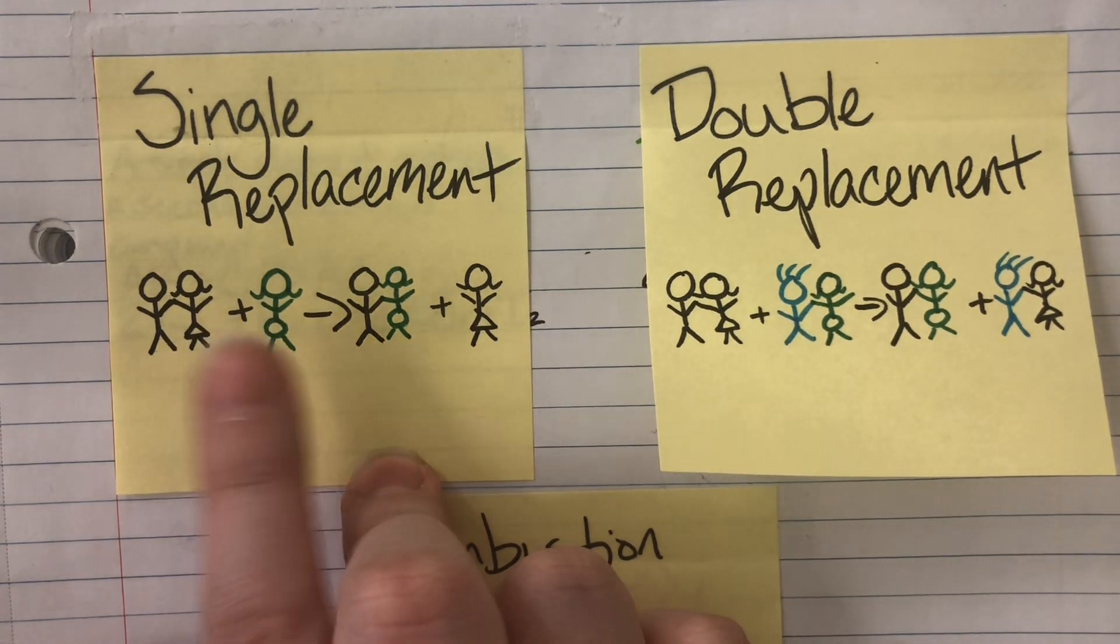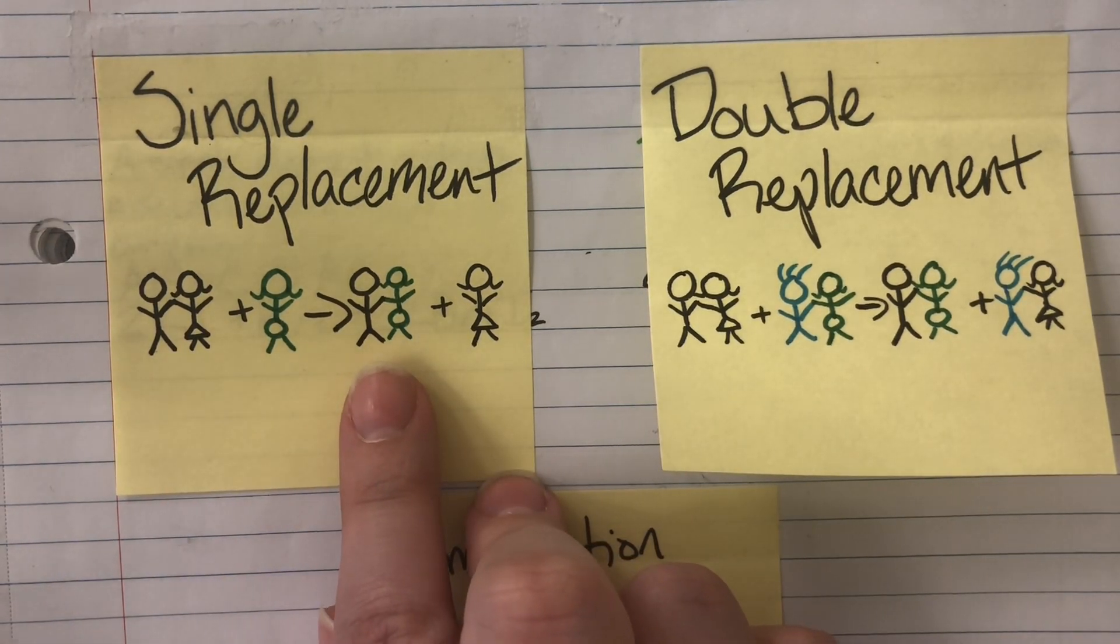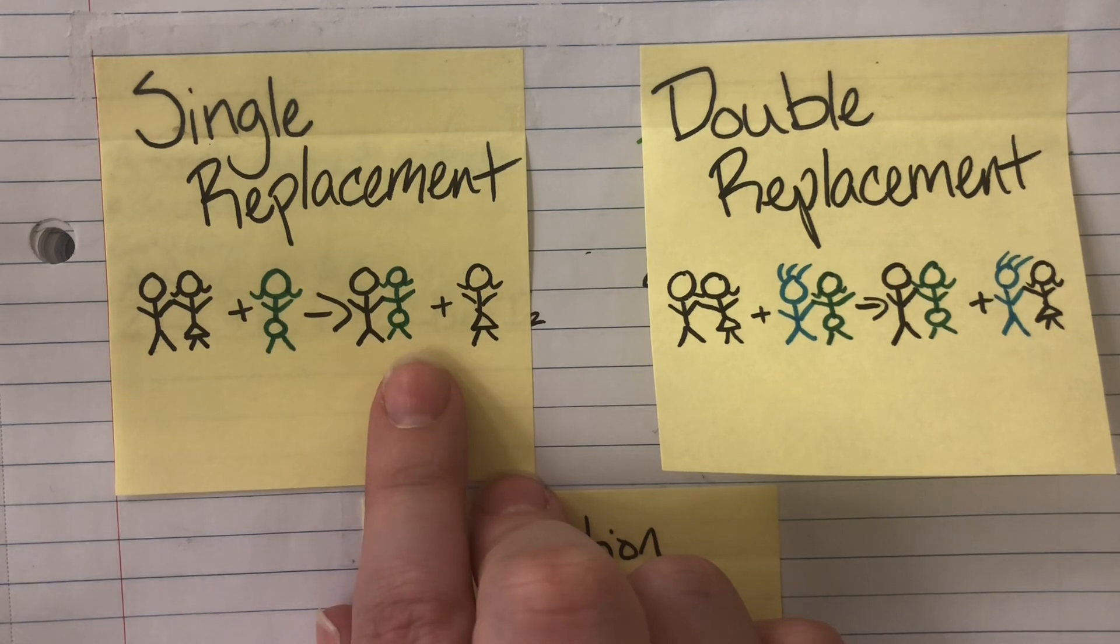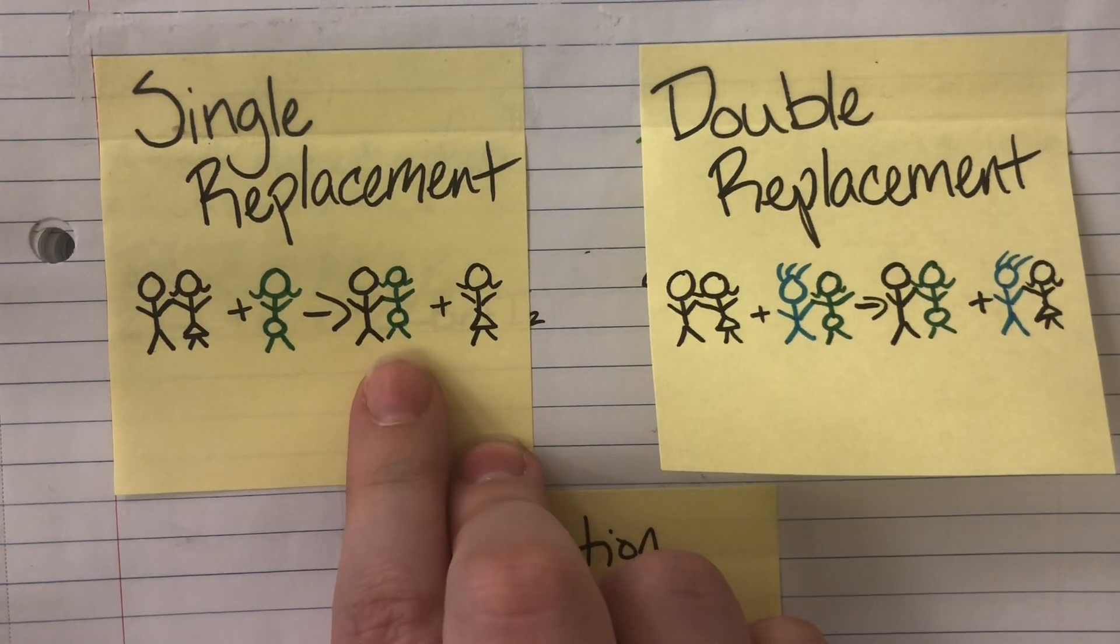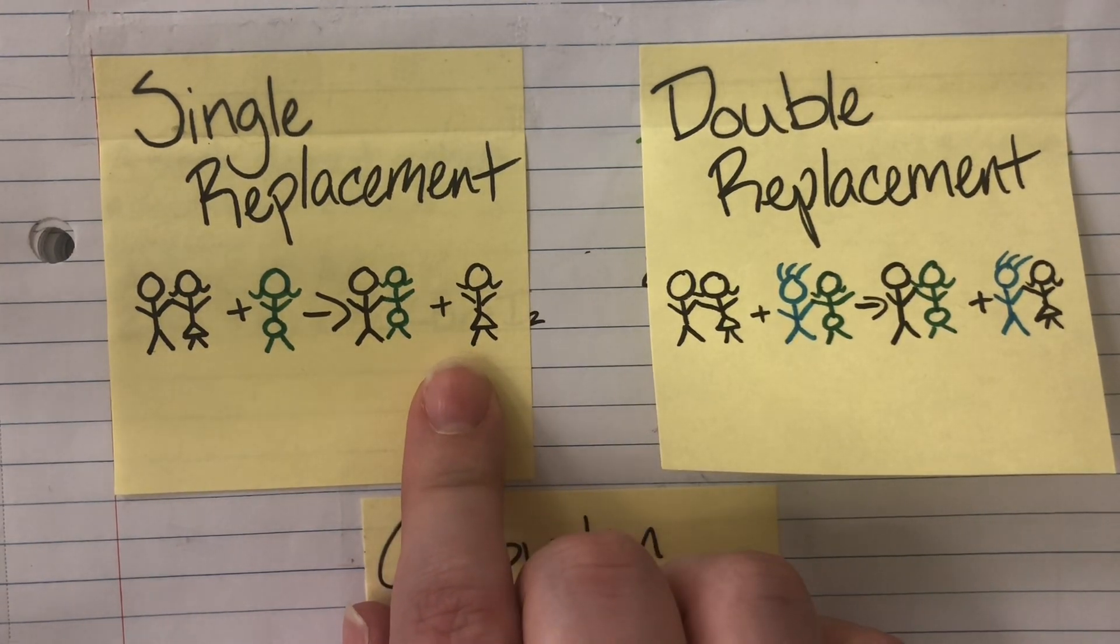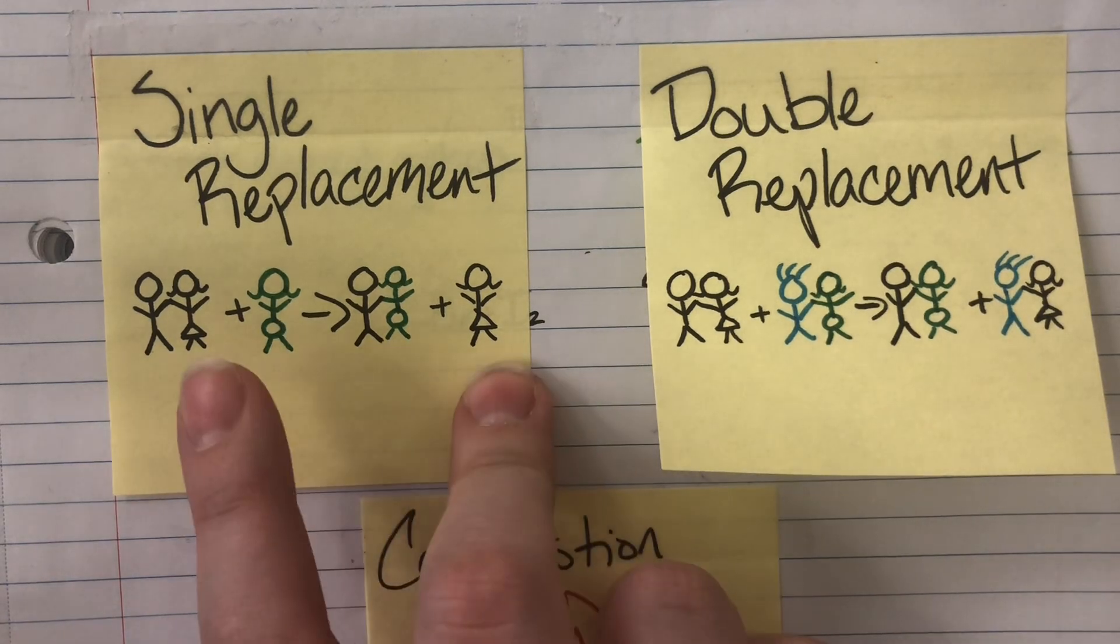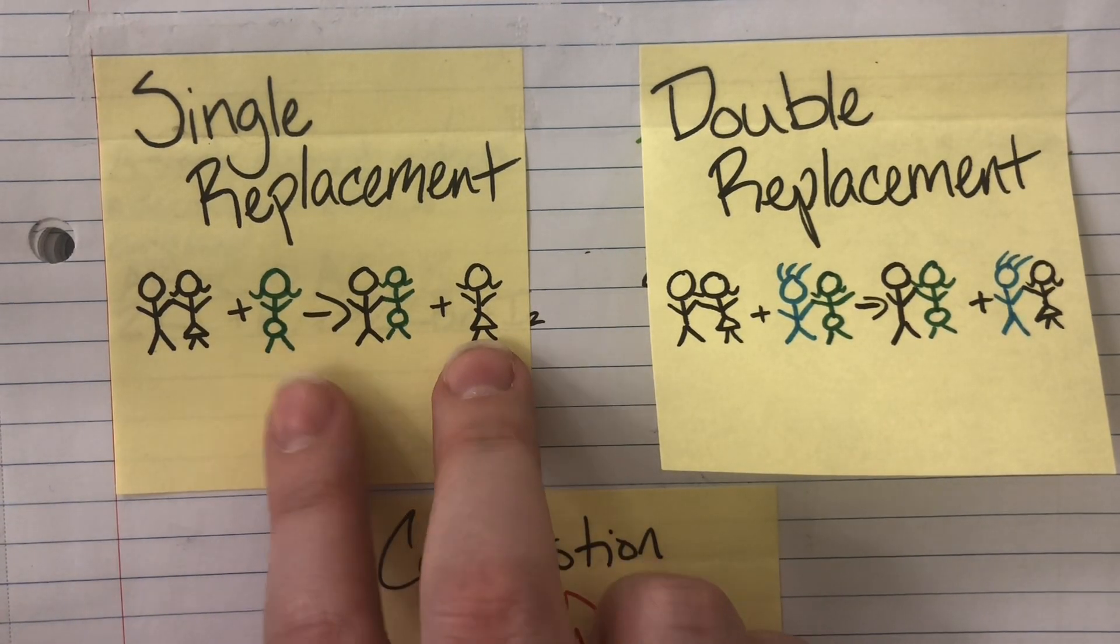Once circle skirt girl comes into the picture she is going to replace the piece that is most like her. So she is going to replace triangle skirt girl and they are going to form a new couple, bald boy and circle skirt girl, leaving triangle skirt girl out in the cold all by herself. Single. I'm going to have a single on each side of the reaction arrow.